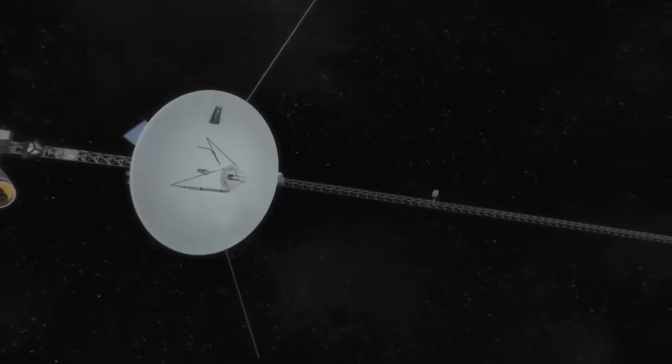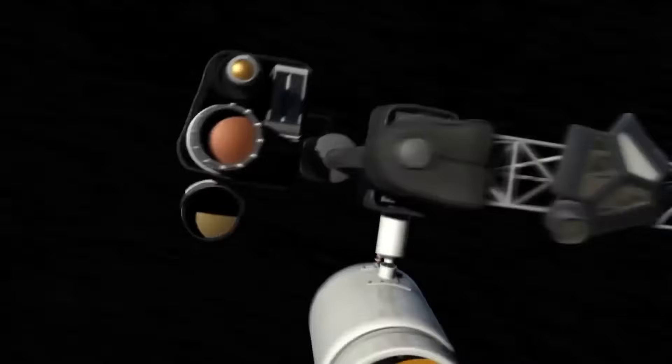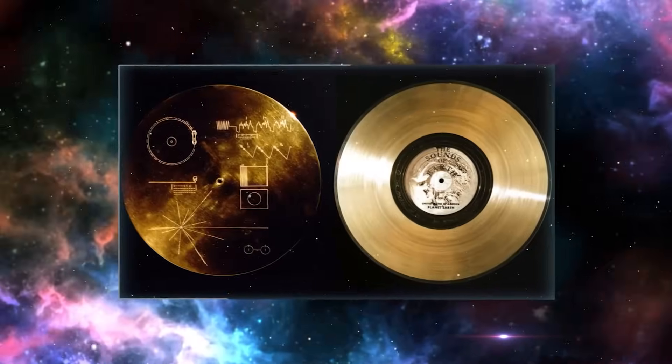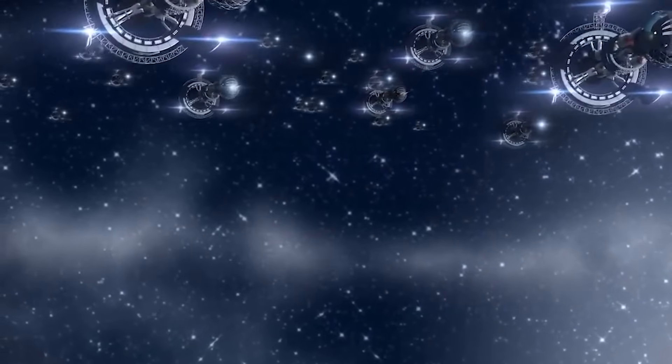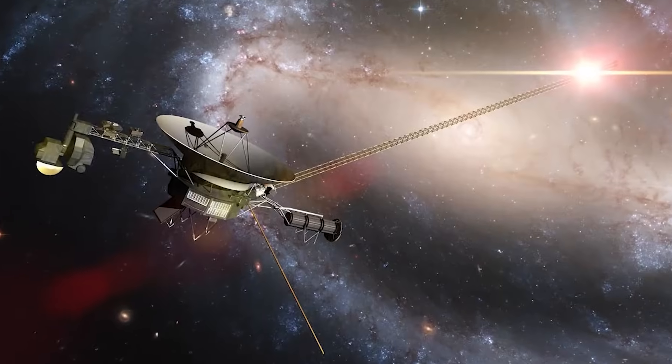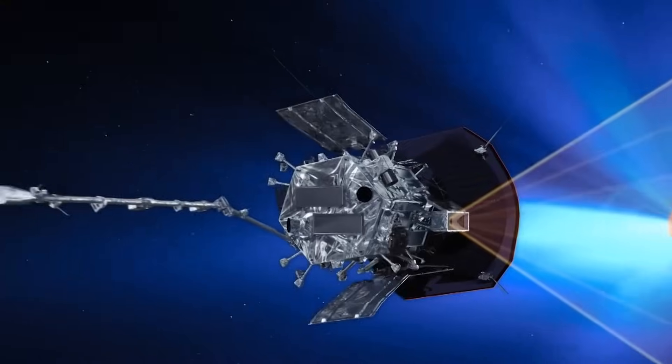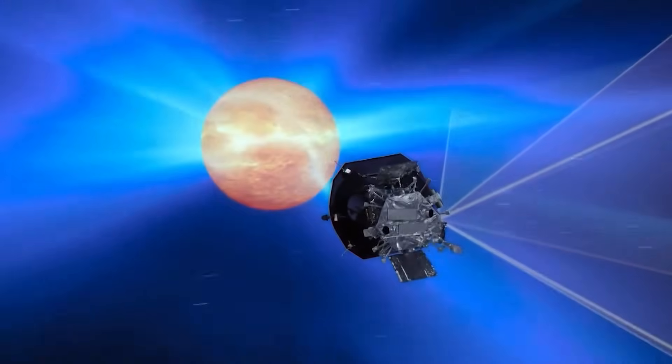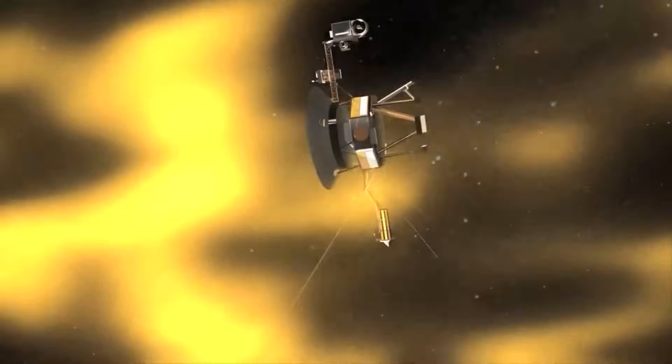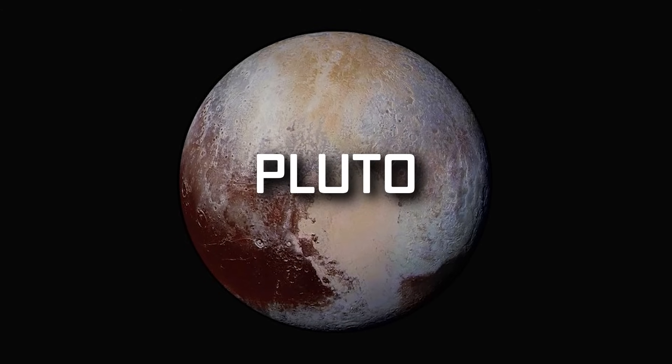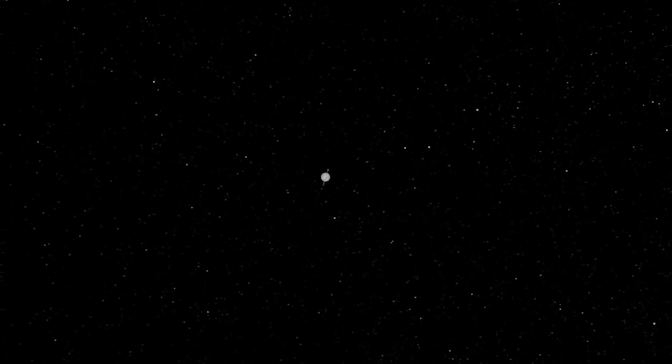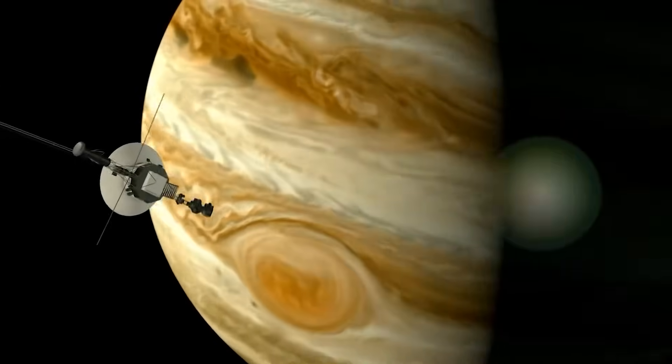Computer models indicate Voyager 1 could continue coasting undamaged for billions of years before eventually approaching another star system. Carrying the golden record, Voyager 1 may one day be found by an alien civilization, a lasting memento from Earth long after humanity is gone. Some dream we could one day catch up to Voyager 1 and the golden record, despite traveling ten times faster than today's probes can manage. For now, it journeys on alone. Voyager 1 continues its future travels far beyond Pluto, pioneering new frontiers. As it presses on into the cosmos, the spacecraft's legacy is only beginning to be written. Its greatest discoveries likely still lie ahead.